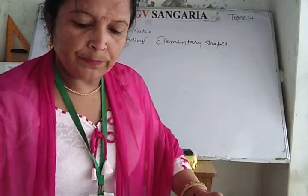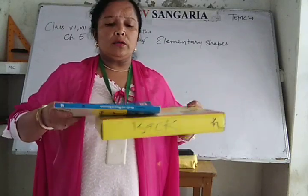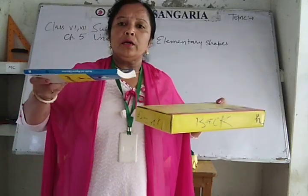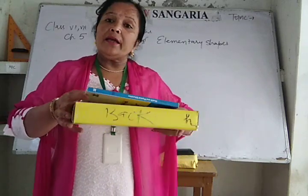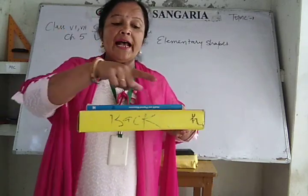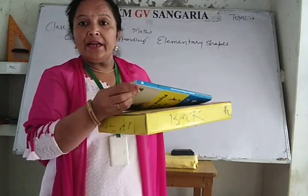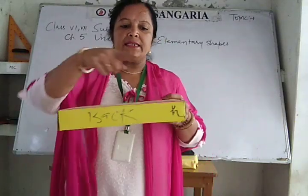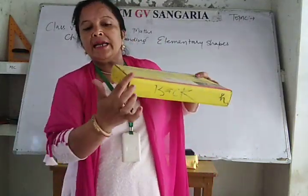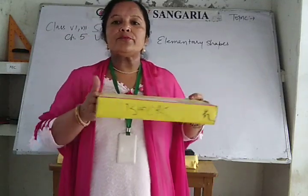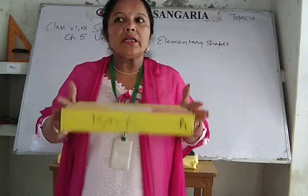This book is also cuboidal. Why? Because it has length, breadth, and height. Similarly about this box — this is the length, this is breadth, and this is the height. That is why this is called a 3D shape.